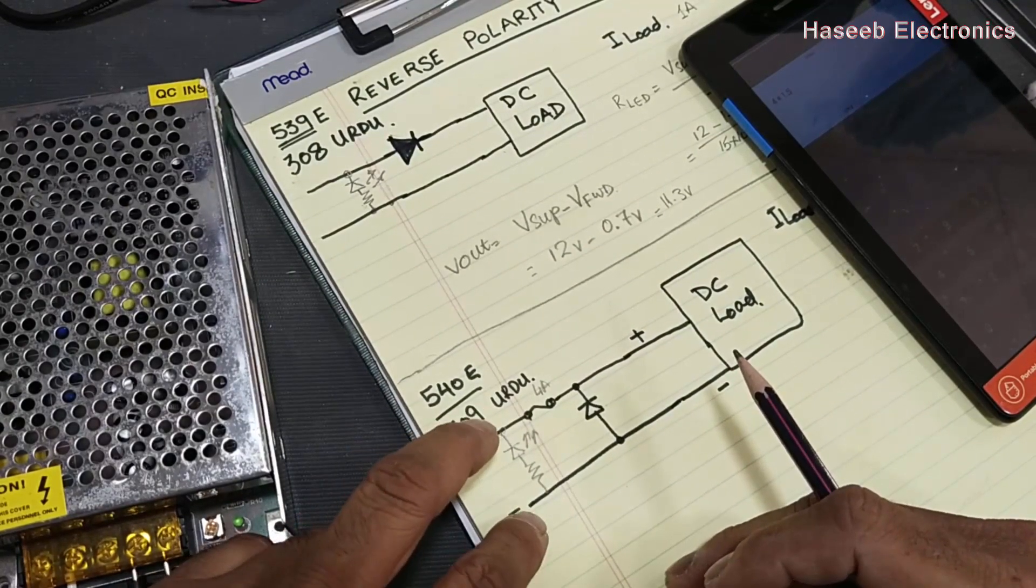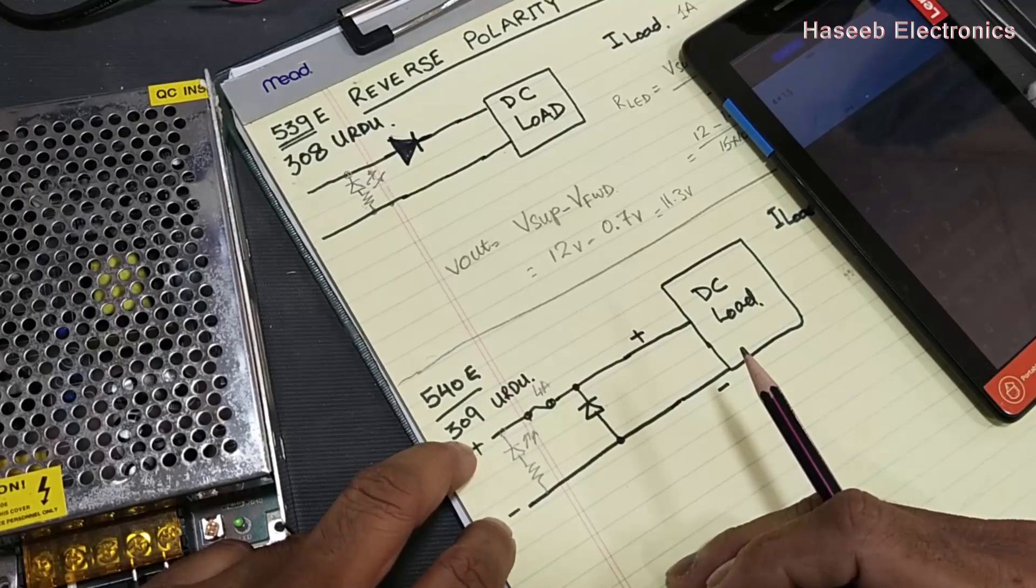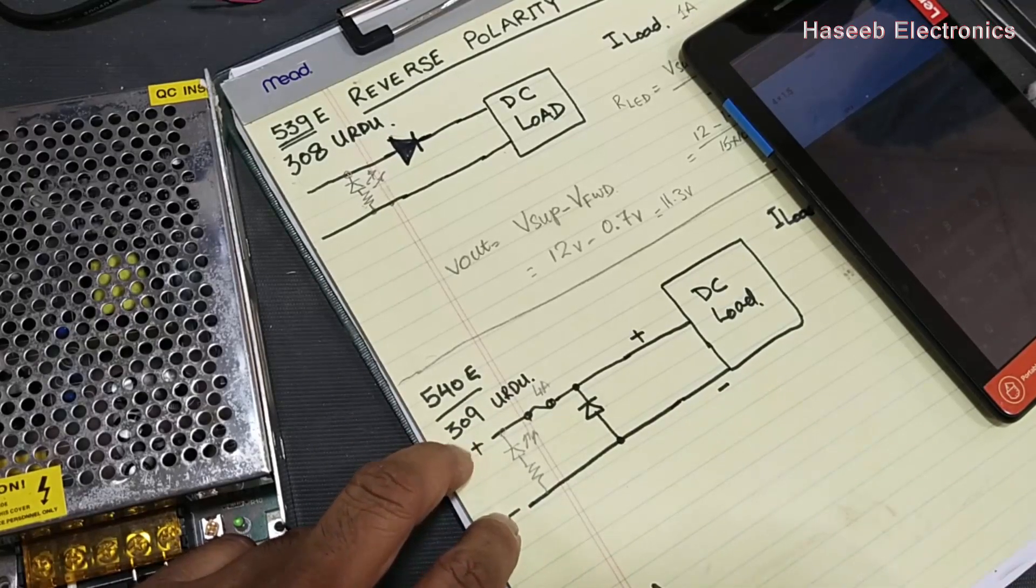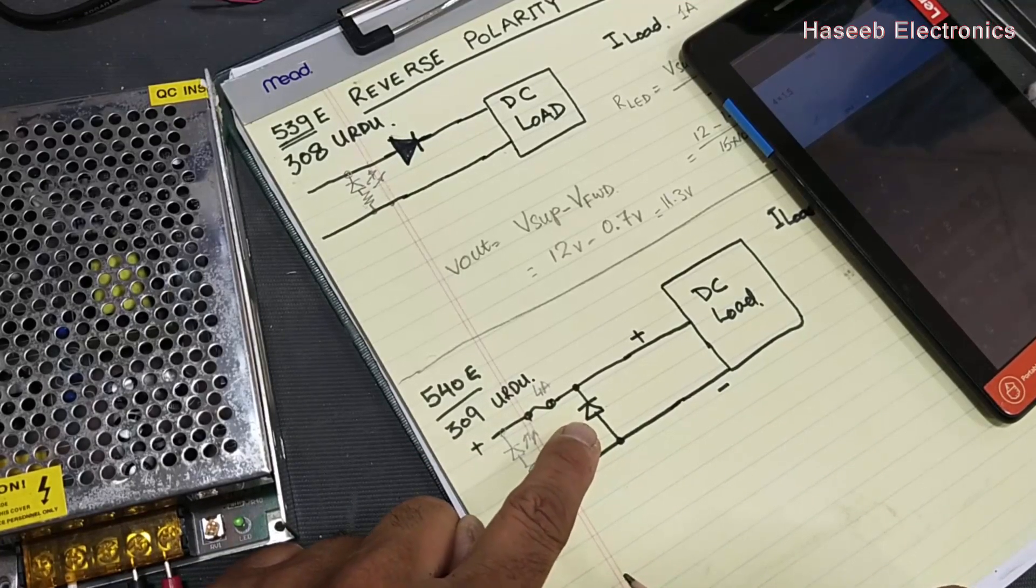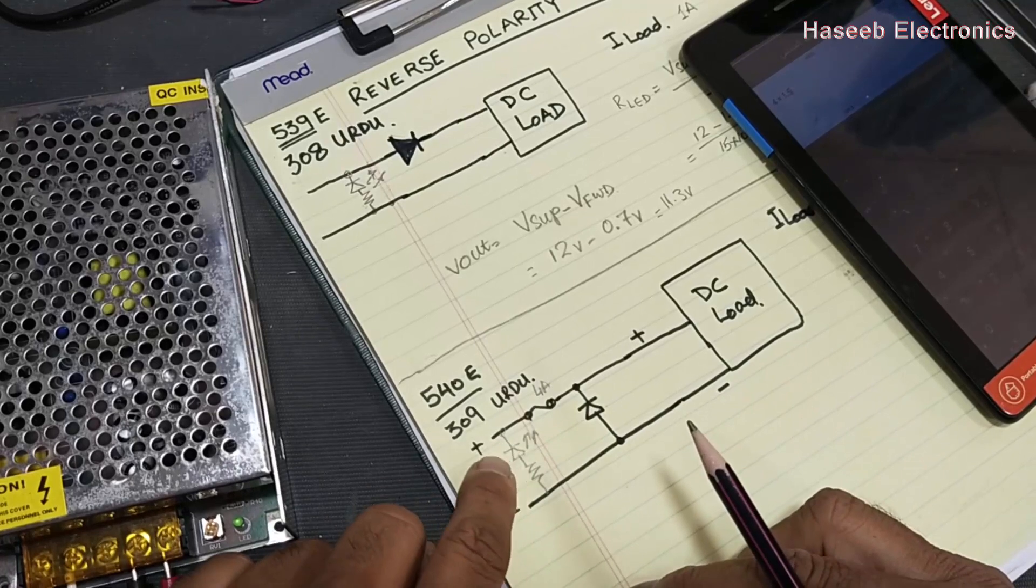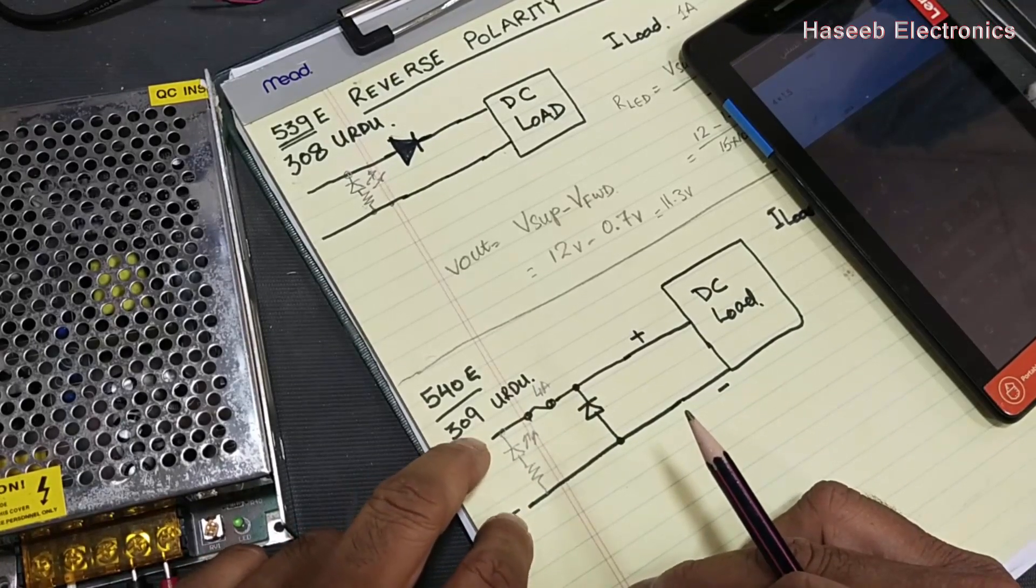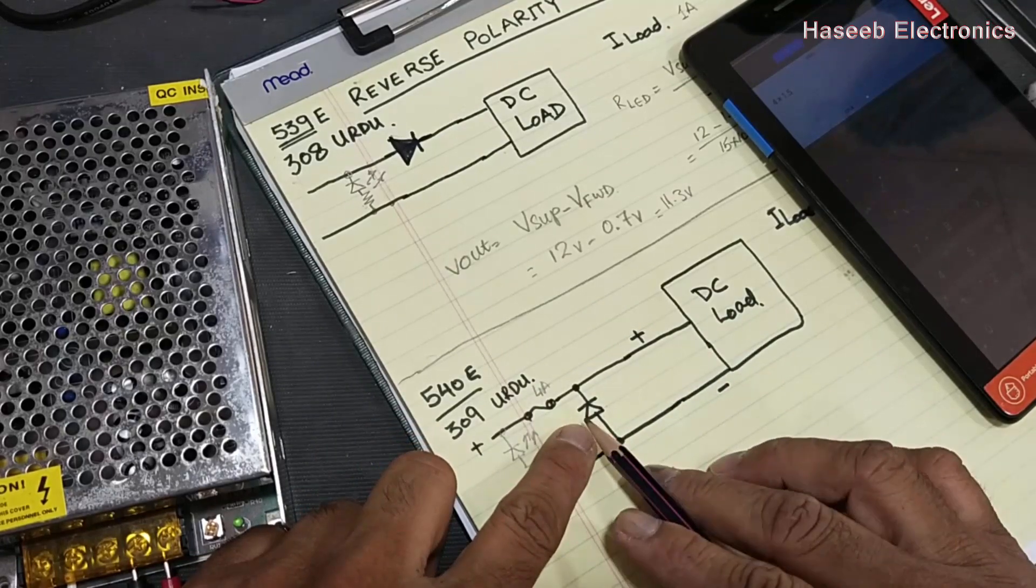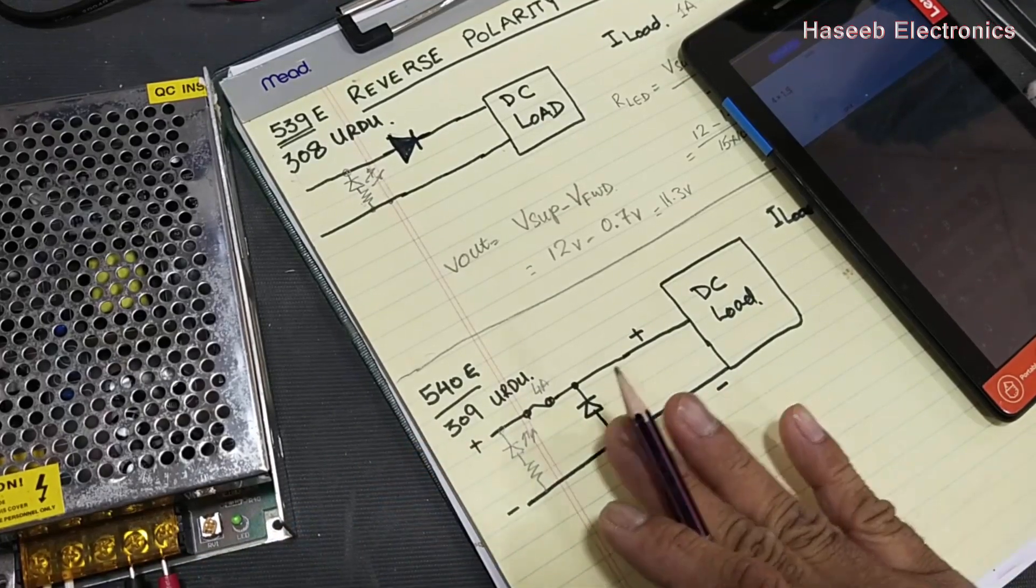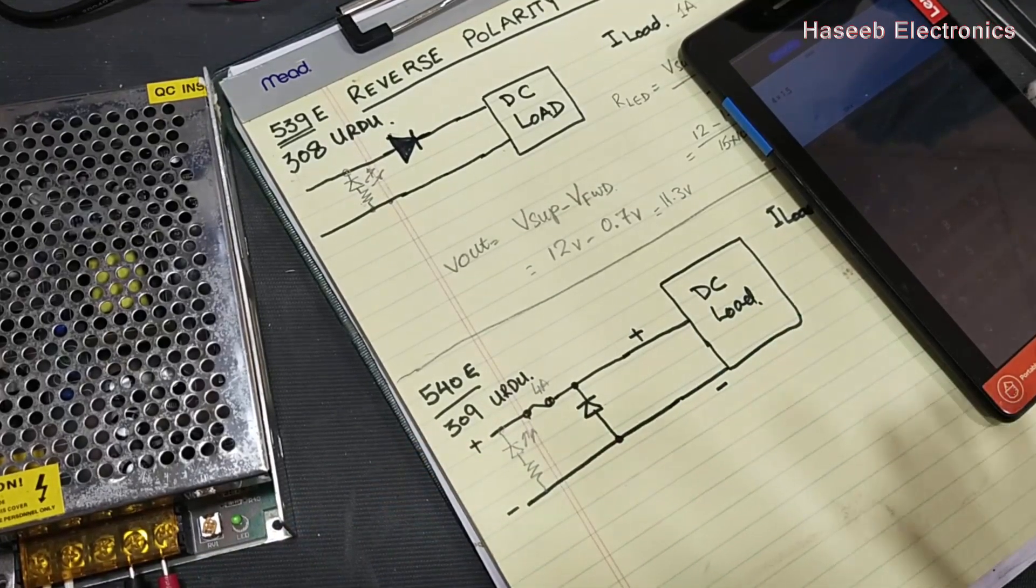Now the second thing in diode selection: we need the blocking voltage, the reverse voltage. Because when the polarity is forward bias, when the polarity is correct, this diode will reverse bias, and its reverse bias voltage must be more than the supply. If we are applying 12 volts here, we can select 40 volt, 50 volt diode for reverse protection.